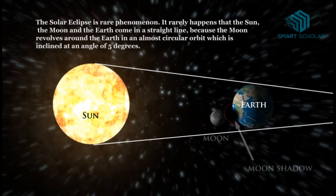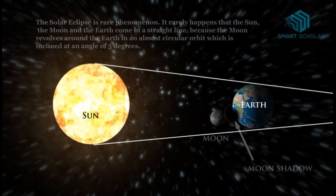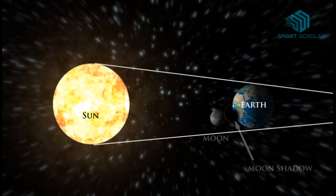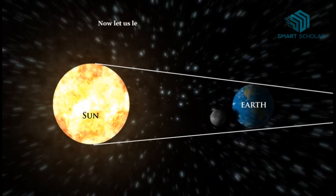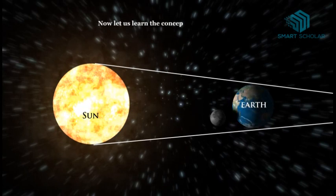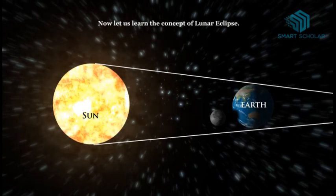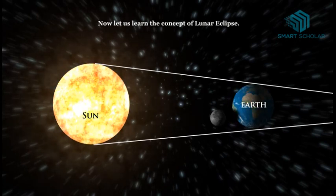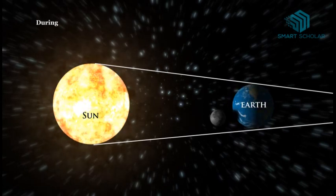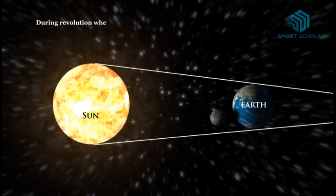Solar eclipses are rare because the moon revolves around the earth in an almost circular orbit which is inclined at an angle of five degrees. Now let us learn the concept of lunar eclipse.